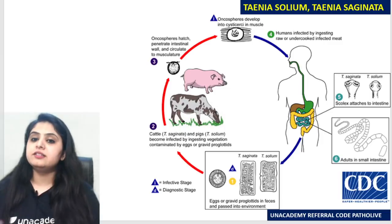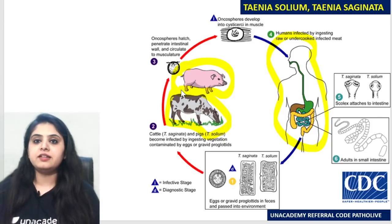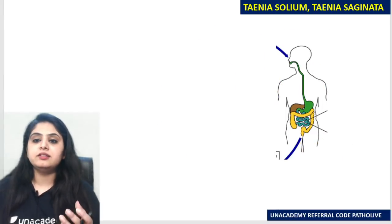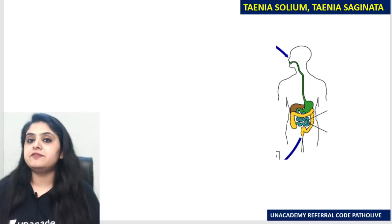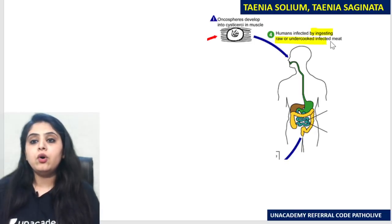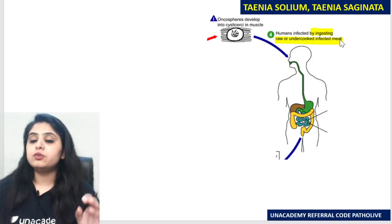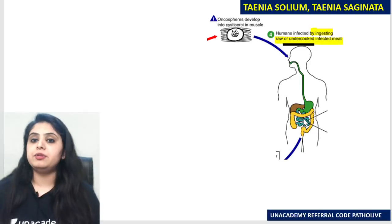Let me show you what the life cycle looks like — I am showing you the life cycle for both exactly. I have a man, I also have a pig, and I also have cattle depending on whether I am dealing with solium or saginata. Let me dissect this life cycle. This is a human — how did the human get the infection, be it Taenia saginata or Taenia solium? The human gets the infection by eating raw or undercooked meat — it could be beef or it could be pork.